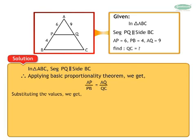Substituting the values of AP, PB, AQ, we get 6 upon 4 is equal to 9 upon QC.